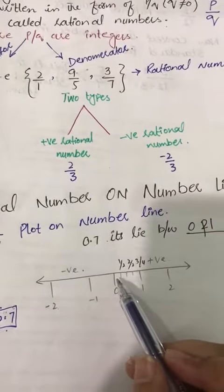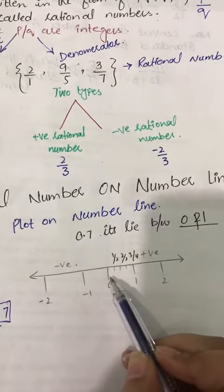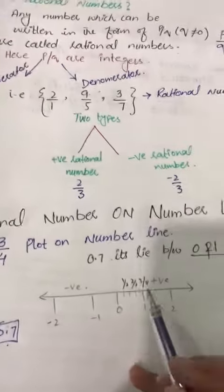How will we plot 0.7 in between 0 and 1? First of all, what we...